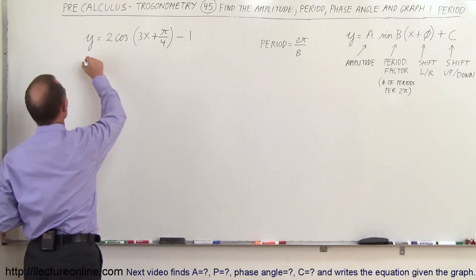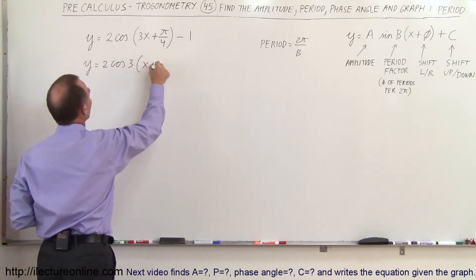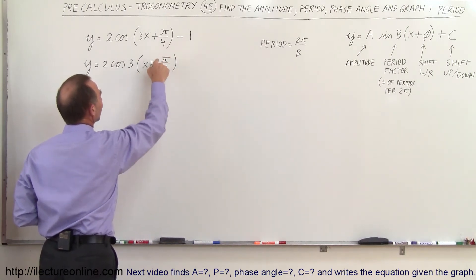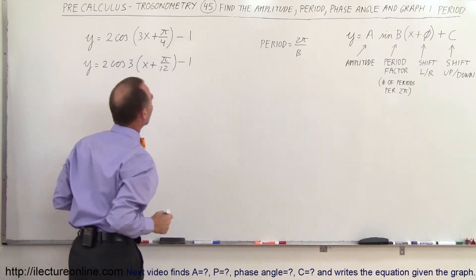So let's do that so we end up with a function that looks like y equals two times the cosine of three times x plus and when you factor out of three this becomes π divided by 12. Notice when you multiply this times this you get 3 over 12 which is 1 fourth which is the same thing. Again of course you need to minus 1 over there.